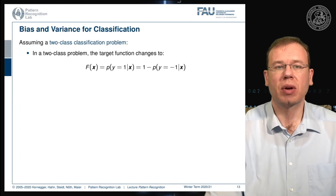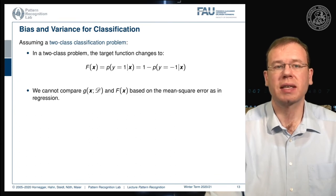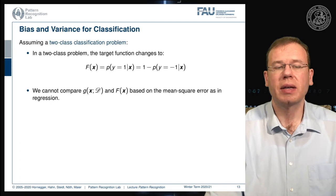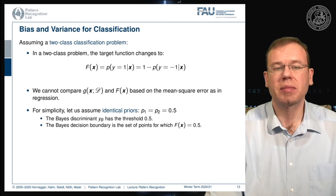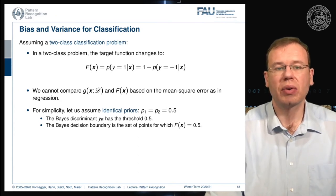In a two-class problem, the target function changes to p(y=1 | x), which can be expressed as one minus p(y=-1 | x). Here we cannot compare g(x) and f(x) based on mean square error as in regression. For simplicity we use identical priors p1 = p2 = 0.5. This means the Bayes discriminant has a threshold of 0.5, and the decision boundary is the set of points for which f(x) = 0.5.